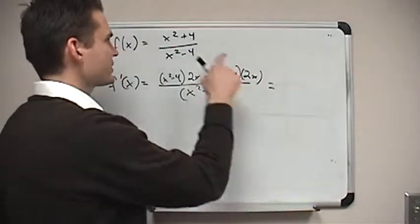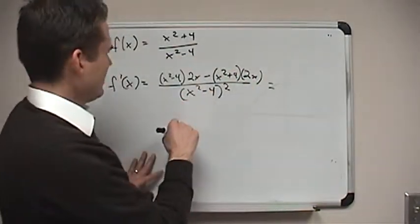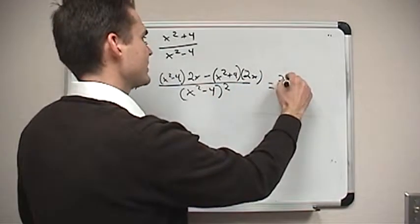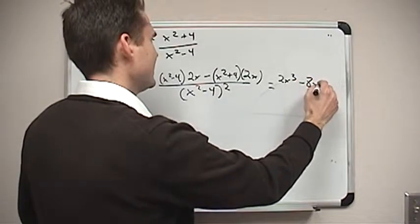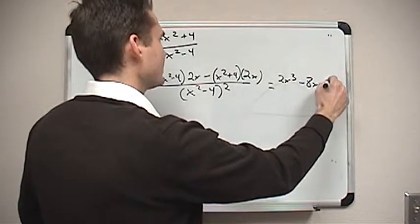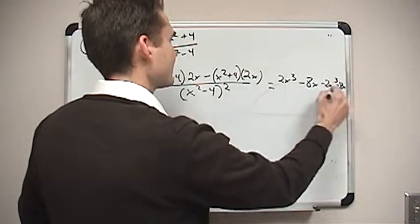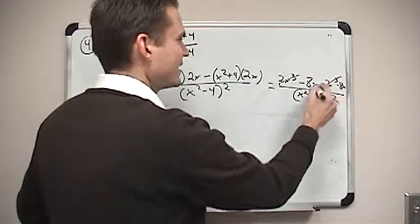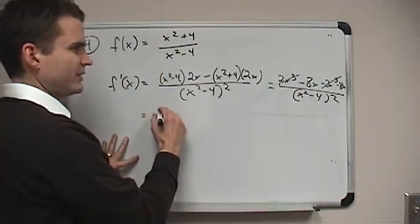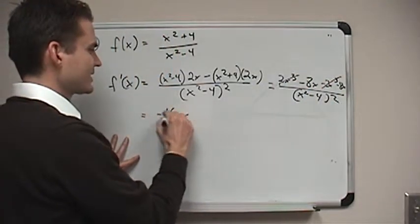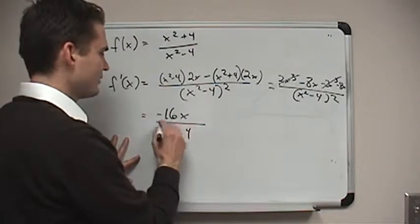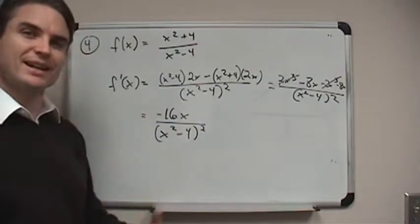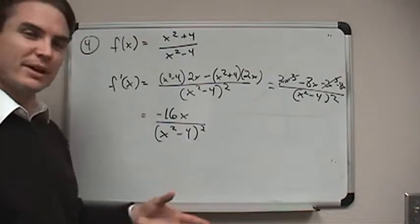All over the denominator squared. The first derivative of this function — we're going to get 2x cubed minus 8x, and then minus 2x cubed minus another 8x, all over x squared minus 4, squared. Some things cancel here. The first derivative is negative 16x over (x squared minus 4) squared. Now that's only the first derivative — we still need the second derivative in order to find out something about concavity.